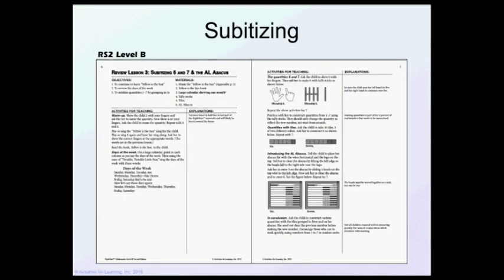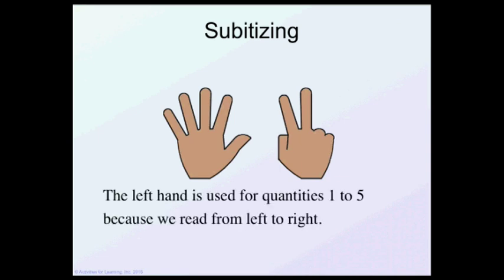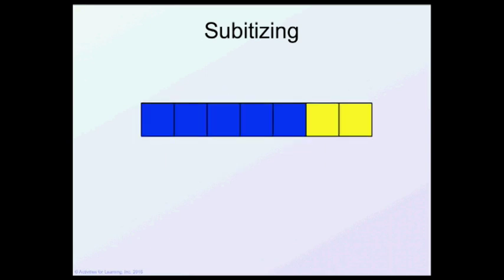Continuing on with subitizing and looking at six and seven and the abacus. Here I've got seven. You can see I have five and two more. The left hand is used for quantities of one to five because we read from left to right. Here's seven with the tally sticks and seven with tiles or squares. You can see that blue is five because five has a middle.